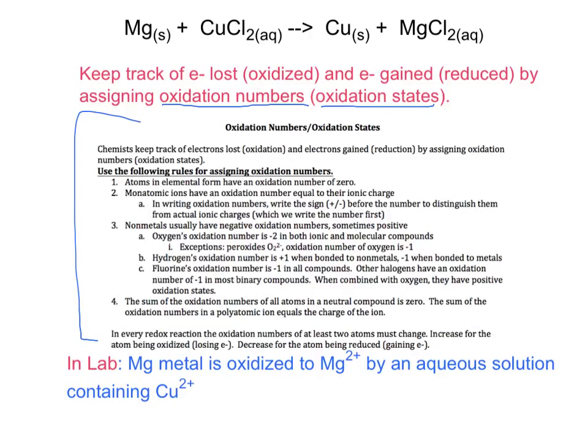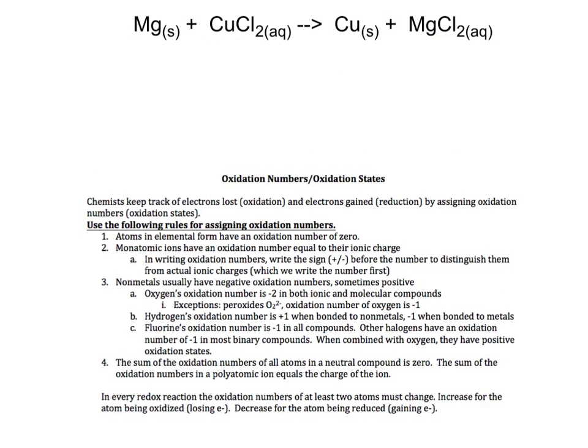In lab, we had our magnesium metal being oxidized to form Mg2+. Here it's solid. Over here it's in solution, so it's floating around as Mg2+. And this was oxidized by the copper 2+ in solution here. On the next slide here, we'll go through how to actually assign oxidation numbers or oxidation states for particular substances. I'm going to reference the rules down here as we go.